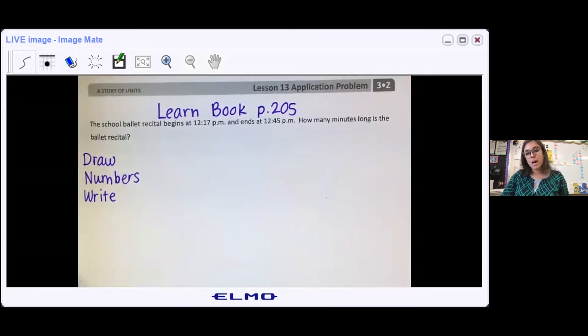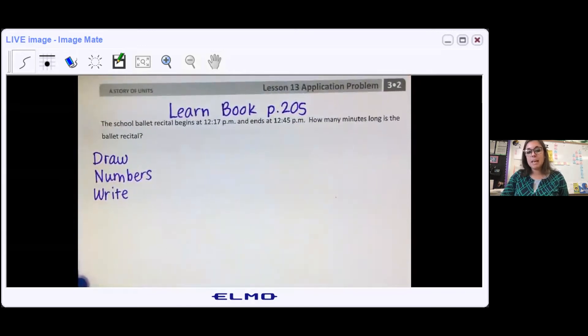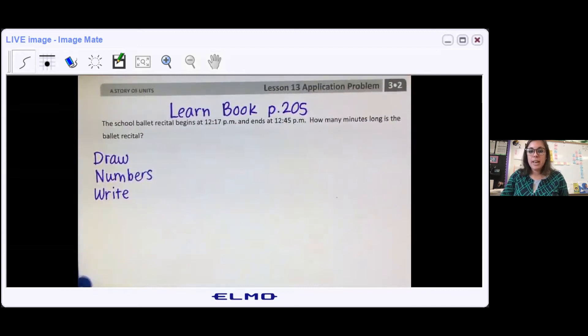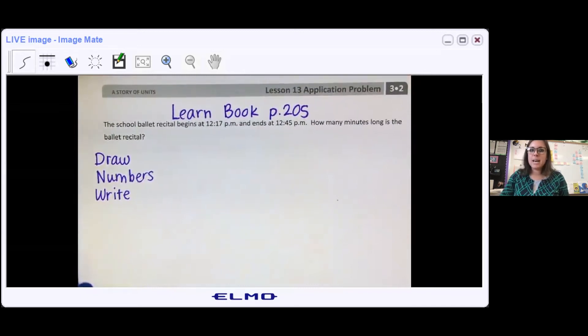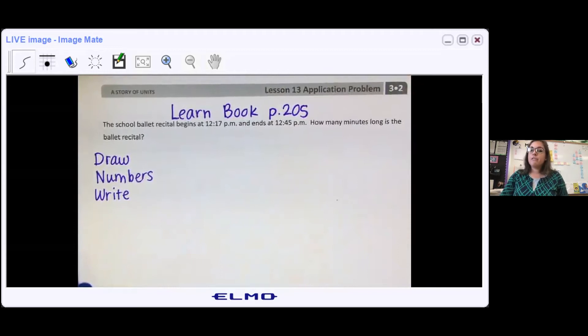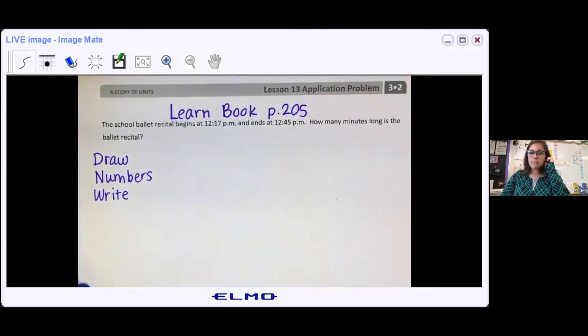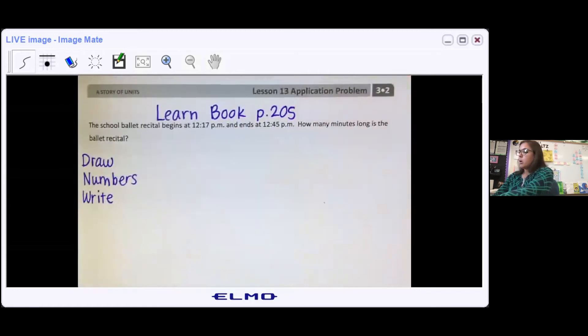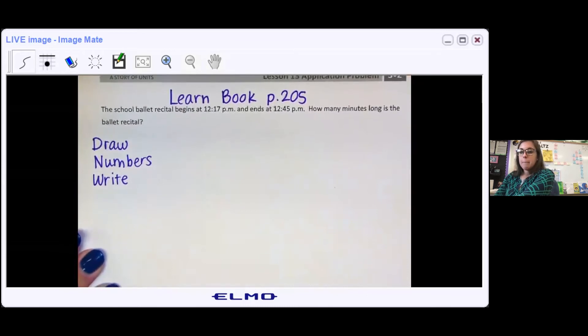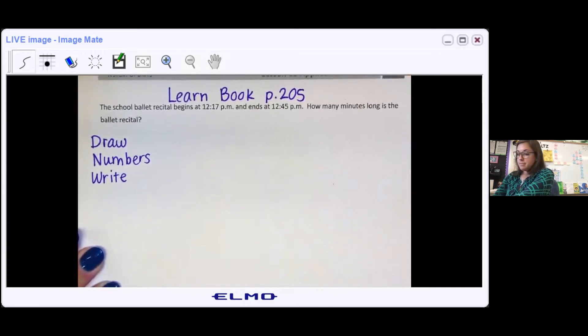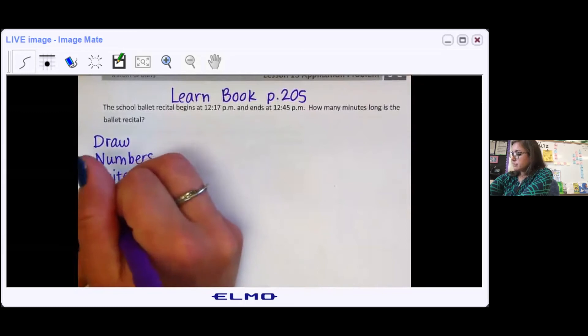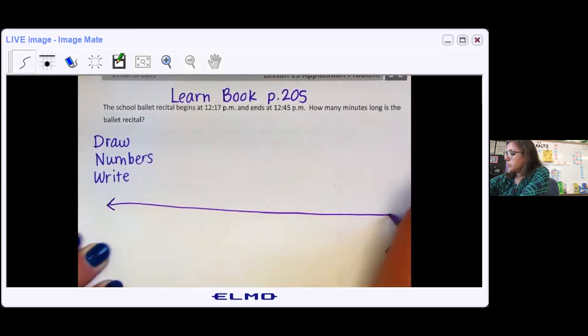Okay, I really hope you did pause the video and you're not just copying. Part of becoming a great mathematician is by trying to figure these problems out on your own first and then checking to see how you did. So there's a lot of different ways you could have drawn the model. You could have done SME, start time, minutes and end time, or you could have drawn a number line, which is what I'm going to show you today.